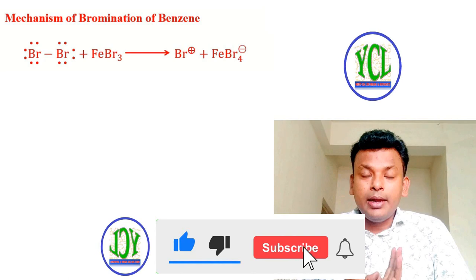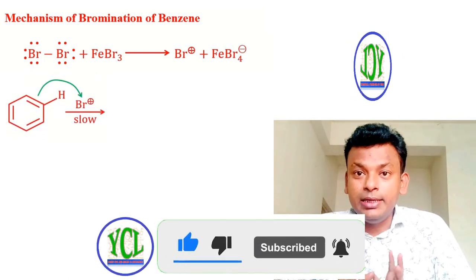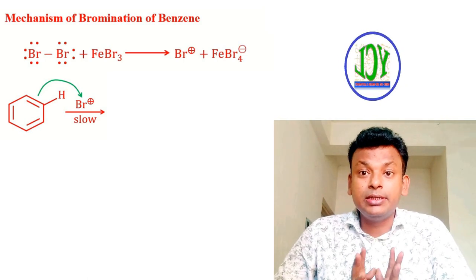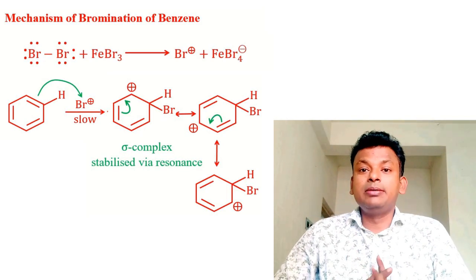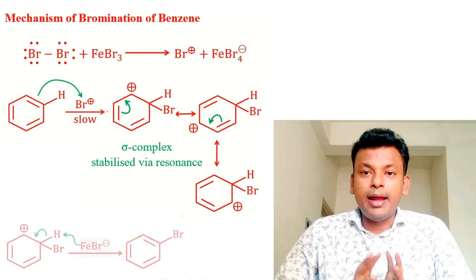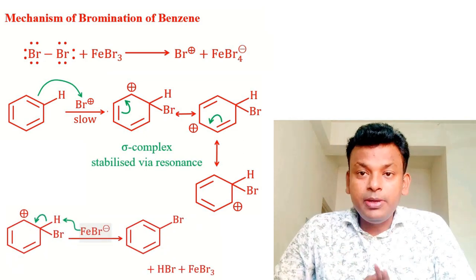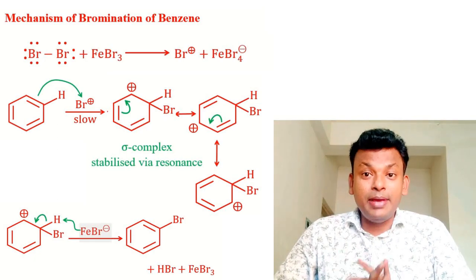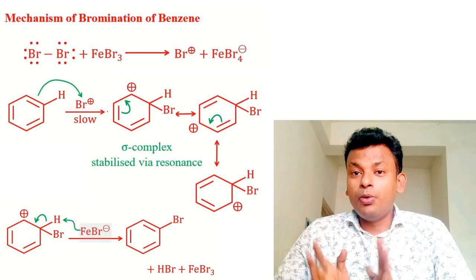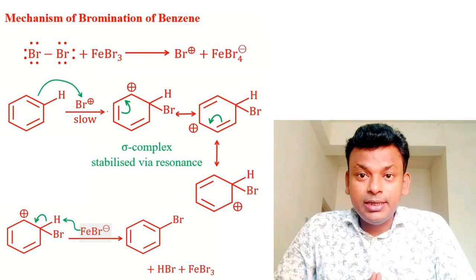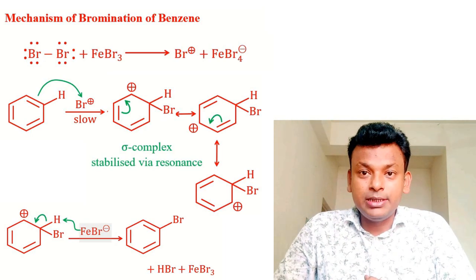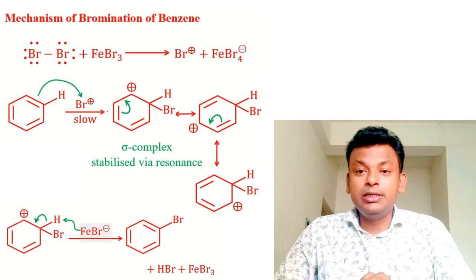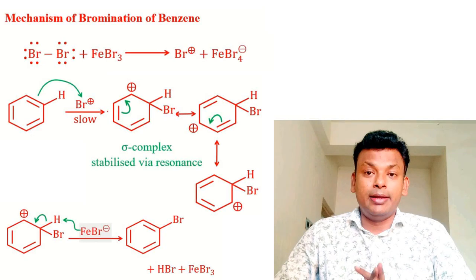Benzene reacts with the electrophile Br⁺ — this is the rate-determining step (slow) — forming a sigma complex stabilized via resonance through three resonance structures. FeBr₄⁻ acts as a base and accepts a proton, forming bromobenzene and regenerating FeBr₃. Aromaticity is present in benzene, lost in the sigma complex (only 4 pi electrons), and regained in bromobenzene.